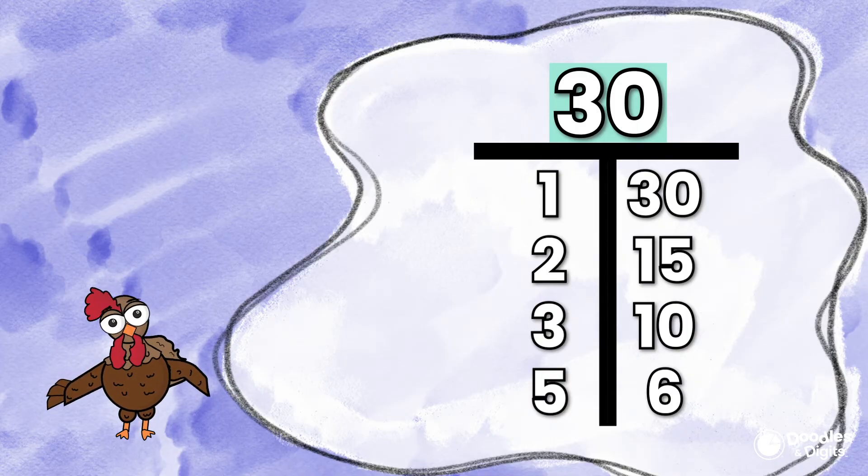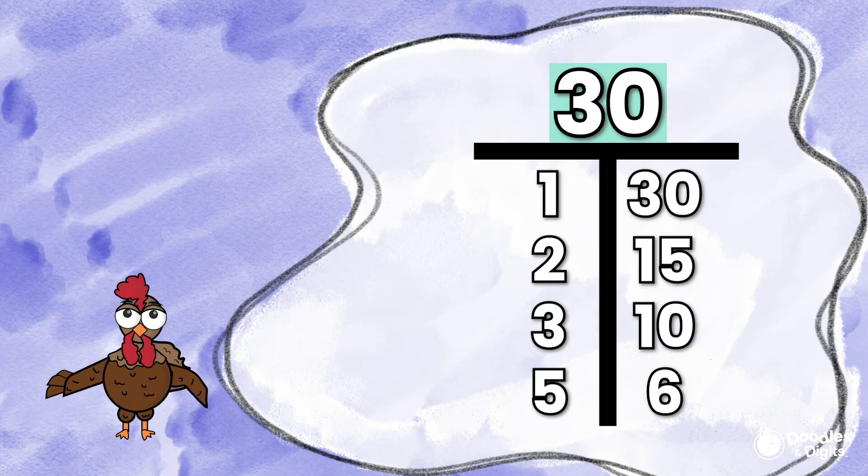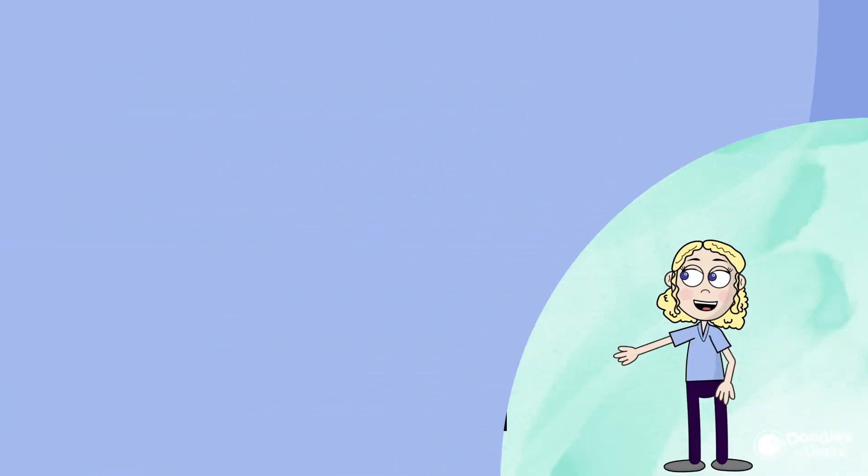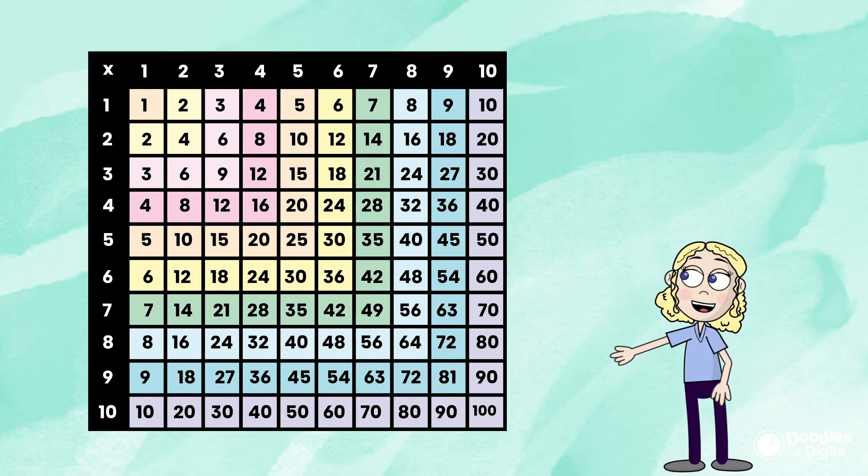So our factors of 30 are 1, 30, 2, 15, 3, 10, 5, and 8.